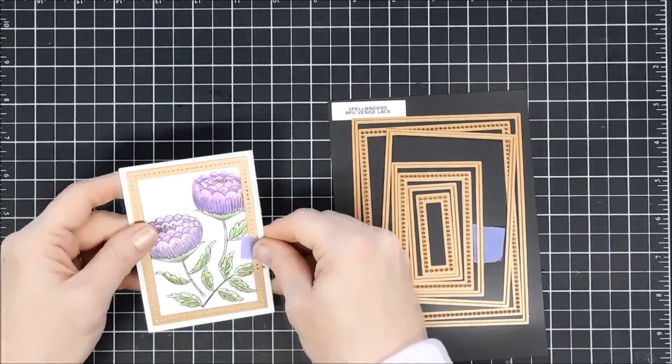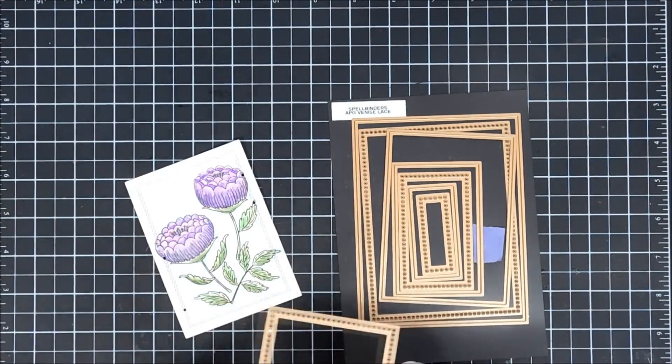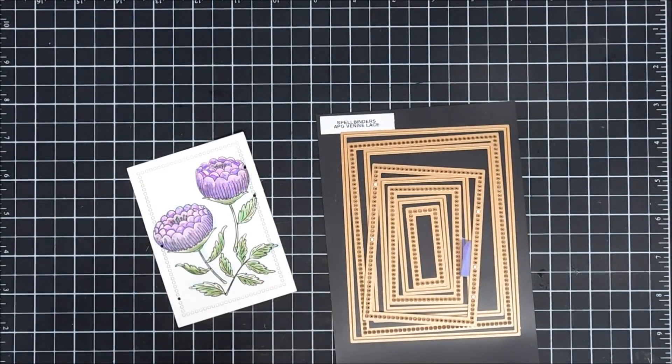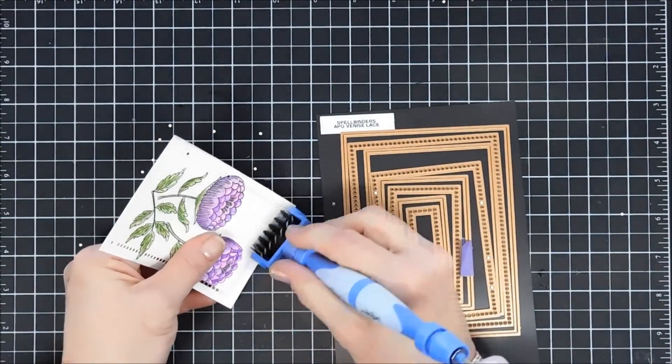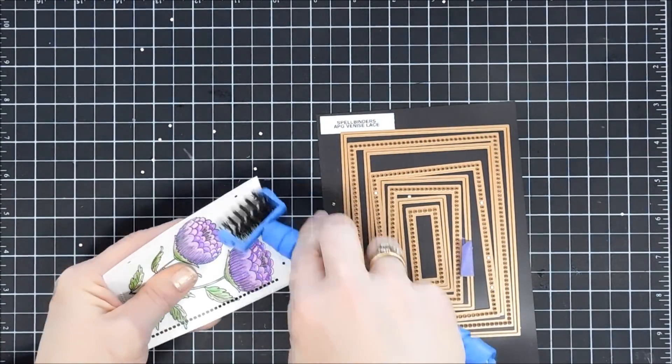Once that's die cut, I'm going to use my tool and poke out all those little holes. I think this is a great way to add a little bit of detail. You just rub your brush over those holes and they come out.